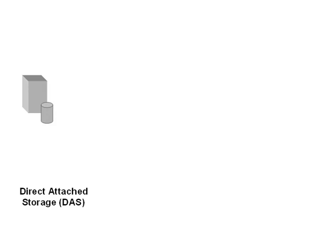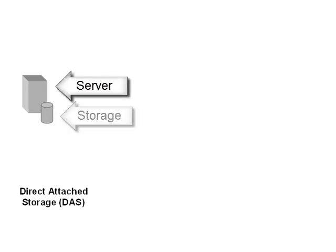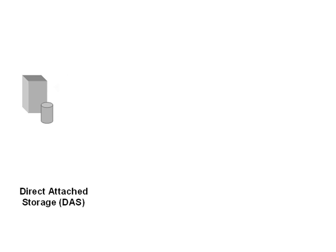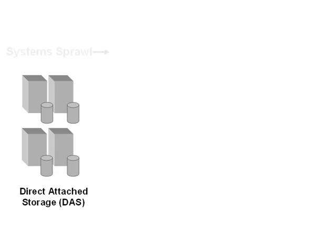In the beginning there was Direct Attached Storage. This is where a server has its own storage in the form of one or more disk drives. Whether this storage sits inside the server or externally, by definition it is directly attached to a single server and so cannot be shared. No other server can attach to this storage. As servers get added to run the various applications the organization needs, we eventually end up with System Sprawl — many servers each with its own storage.